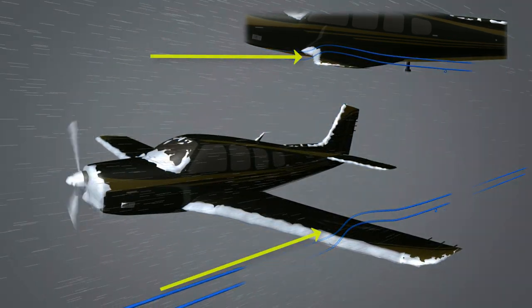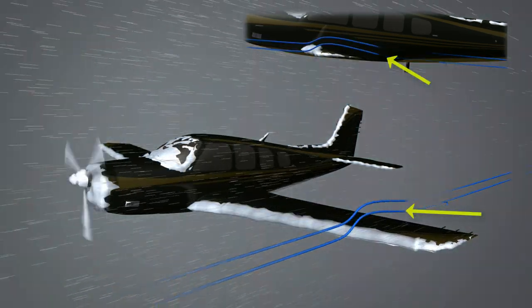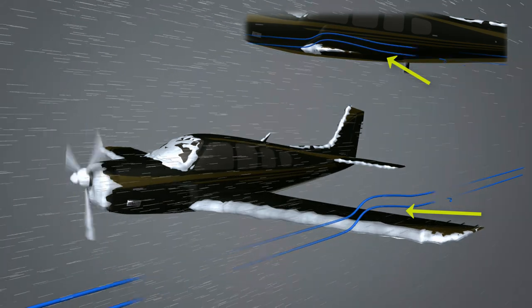Aerodynamically, ice alters laminar airflow and decreases lift. See how the blue lines begin to curl, representing the eddies of disrupted laminar flow?